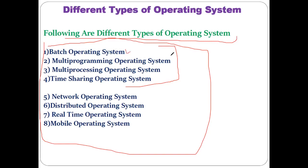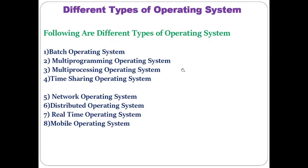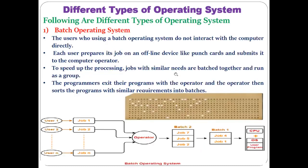Today's point of discussion is the different types of the operating system. We are going to discuss eight types total, but in today's lecture we will discuss four: the batch operating system, the multi-programming operating system, the multi-processing operating system, and the time-sharing operating system.